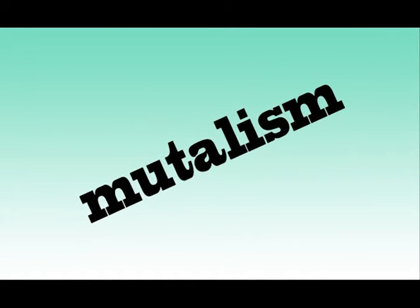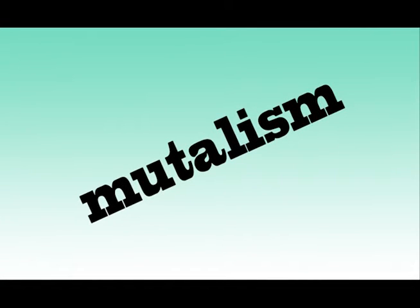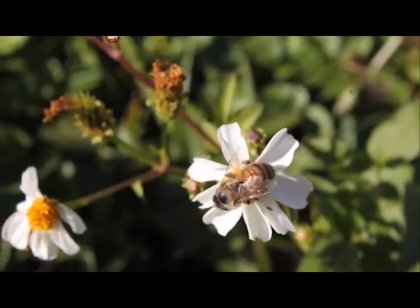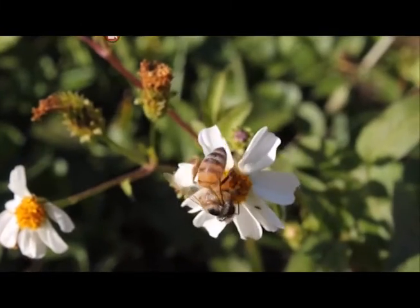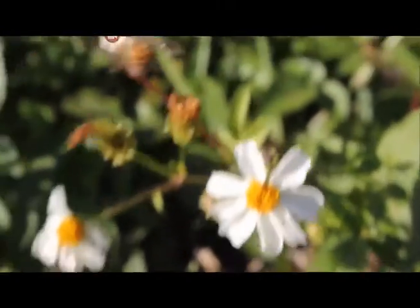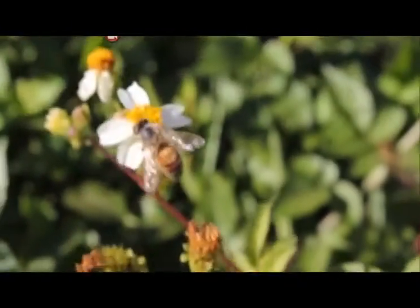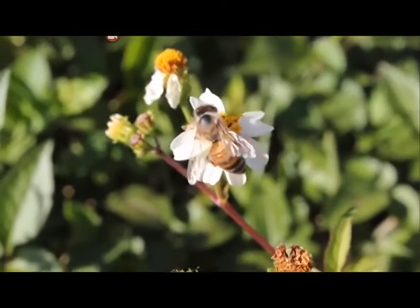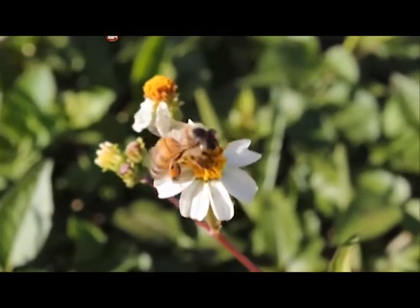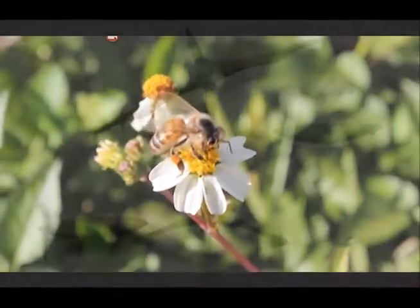Mutualism is another type of organism interaction. It happens when two organisms interact to both species' benefit. This would be like bees, bats, or birds that are pollinators. They receive food from the flowers, and in the process of collecting this food, transfer pollen from one flower to another, allowing for reproduction in the plants.